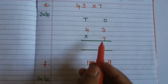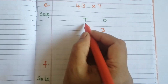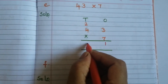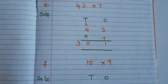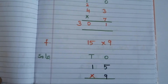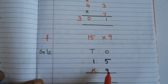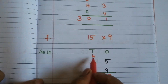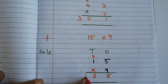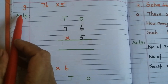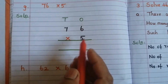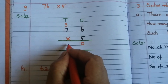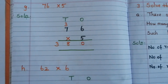E: 43 × 7 — 7 threes are 21, write 1 and carry over 2. 7 fours are 28, plus 2 = 30. Answer is 301. F: 15 × 9 — 9 fives are 45, write 5 and carry over 4. 9 ones are 9, plus 4 = 13. Answer is 135. G: 76 × 5 — 6 fives are 30, write 0 and carry over 3. 7 fives are 35, plus 3 = 38. Answer is 380.